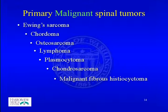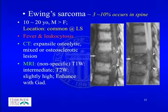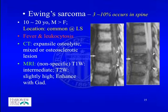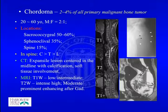Primary malignant spinal tumors include Ewing sarcoma, chordoma, osteosarcoma, lymphoma, plasmacytoma, chondrosarcoma, and fibrous histiocytic tumors. Ewing sarcoma has a 3 to 10% chance of occurring in the spine, typically in patients aged 10 to 20 with male predominance, and is commonly located at the lumbosacral region. It is often associated with fever and leukocytosis. CT shows an expansile osteolytic, mixed, or osteosclerotic lesion.